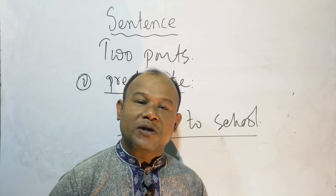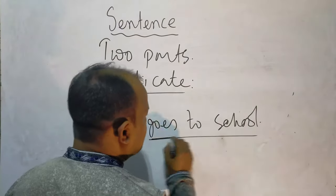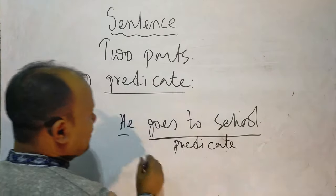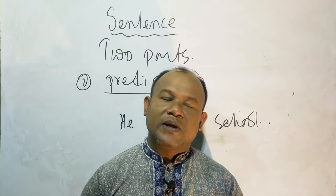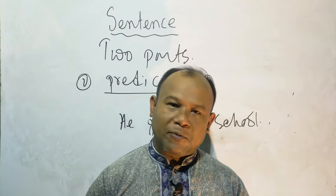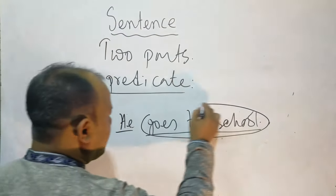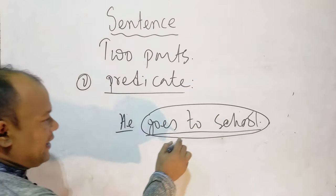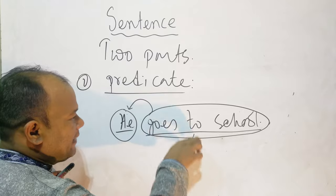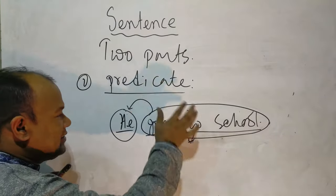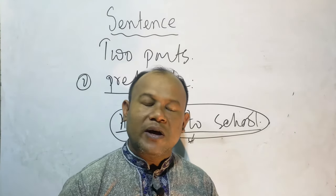So what is called a predicate? The predicate is also the part of a sentence that tells something about the subject. Here, 'goes to school' is the predicate because it tells something about the subject 'he.' So the predicate is the part of the sentence that tells something — 'goes to school' — about 'he.' So here 'goes to school' is the predicate.